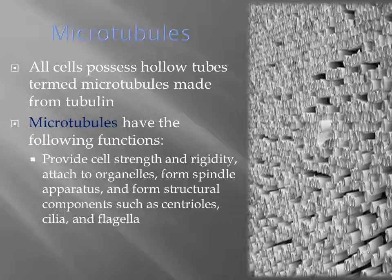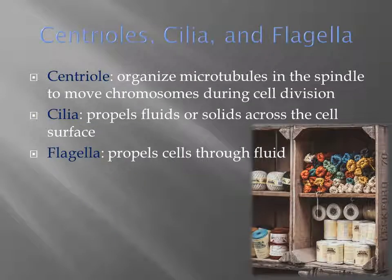All cells possess hollow tubes termed microtubules, made from tubulin. Microtubules provide cell strength and rigidity, attach to organelles, form spindle apparatuses, and form structural components such as centrioles, cilia, and flagella. Centrioles organize microtubules in the spindle to move chromosomes during cell division. Cilia propel fluids or solids across the cell surface, and flagella help propel cells through fluid.